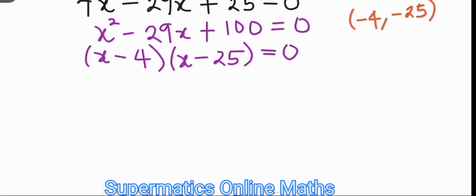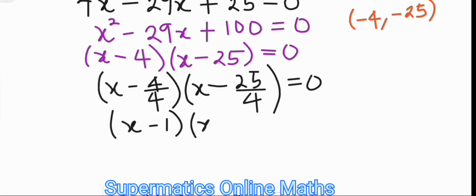And at this point, we take the divide aspect of our slide and divide method, dividing every second term in the bracket by the 4 that we used in sliding earlier on. And this gives us x minus 4 over 4, x minus 25 over 4 equals 0, which is x minus 1, x minus 25 over 4 equals 0.